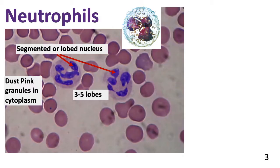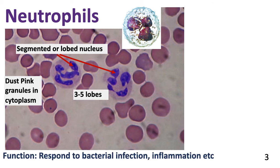The neutrophils are the first type of leukocytes that we are looking at. They are the granulocytes. The nucleus is segmented or lobed — it has three or more lobes, up to five lobes — and it has pink granules in the cytoplasm. They are very fine; we call them dust pink granules. Their function is to respond to bacterial infection or inflammation.